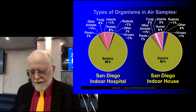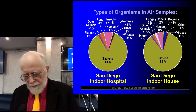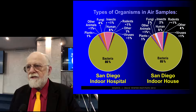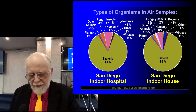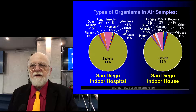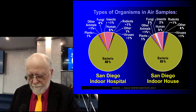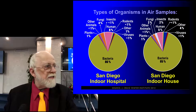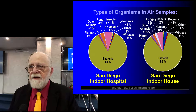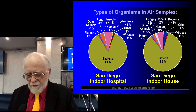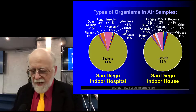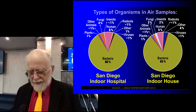You also get organisms from the air you breathe. On the left you can see San Diego Indoor Hospital, and this data was sampled by J. Craig Venter. You can see that 85–86% of the DNA in the hospital air is bacterial. Surprisingly, inside a normal house in San Diego, the air sampled was about the same — 85% bacterial content. Human DNA was very small indeed, 5–8% in the two cases, and the other DNA was made up of insects, rodents, fungi, etc.